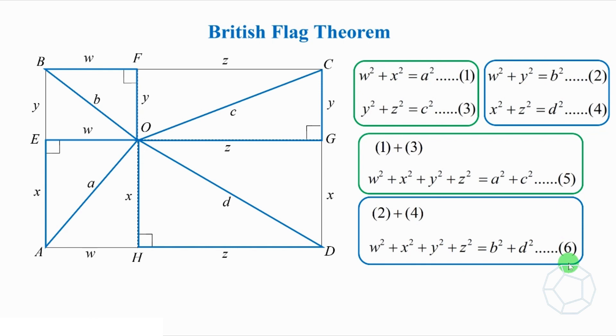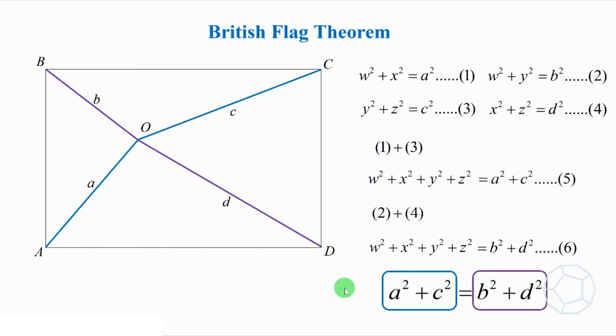Comparing these two equations, the left-hand side are the same. So, the right-hand side should be equal. That is, a² + c² = b² + d². This completes the proof of the theorem.